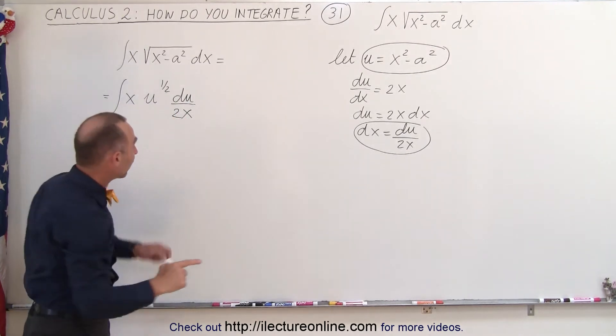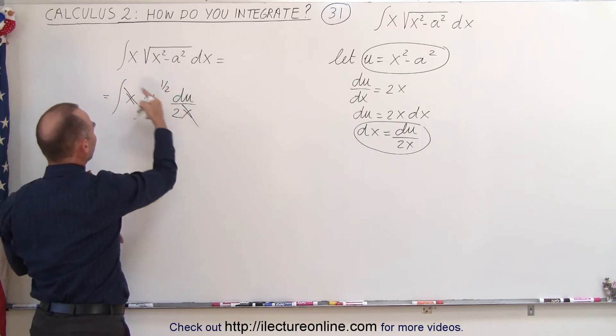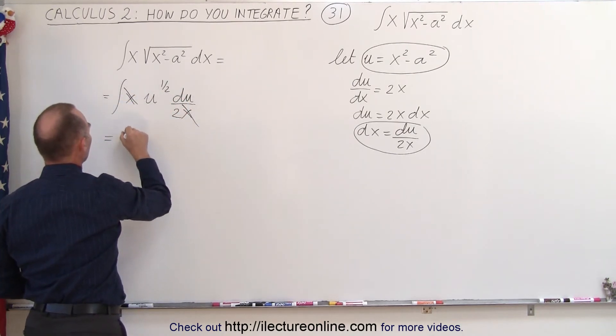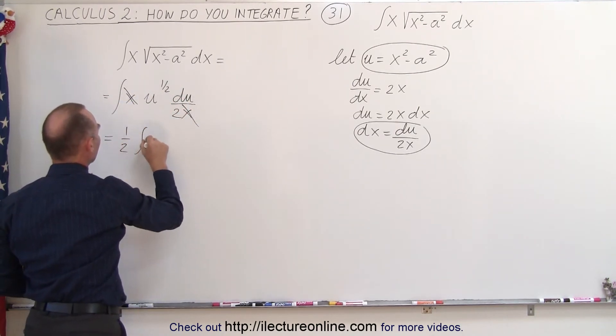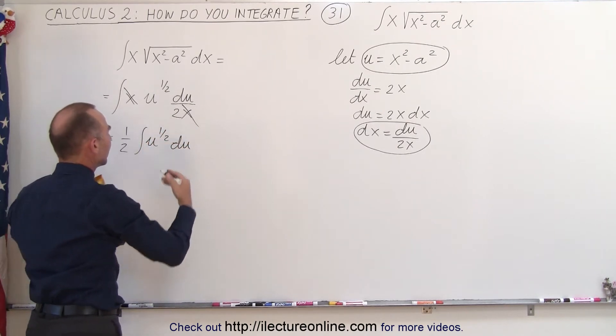Now notice that we can cancel out the two x's, so this x cancels out with that x, and the 1 over 2 can come outside the integral sign, so this becomes 1 over 2 times the integral of u to the 1 half du. And that makes it easier to integrate.